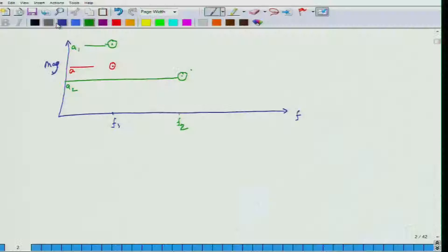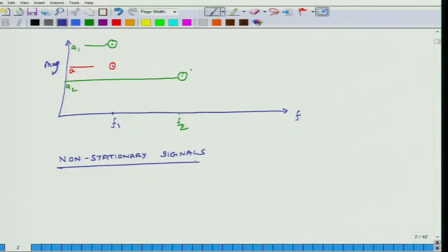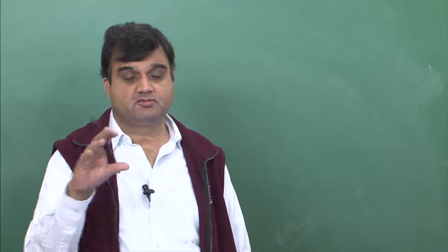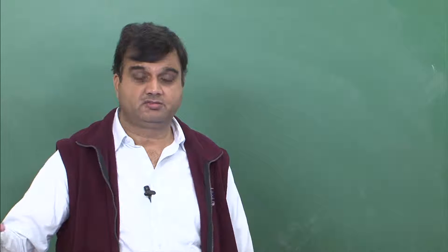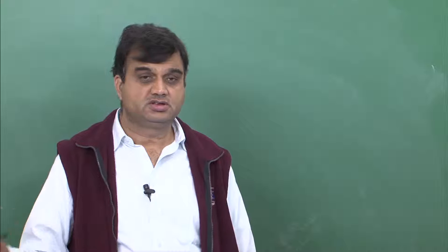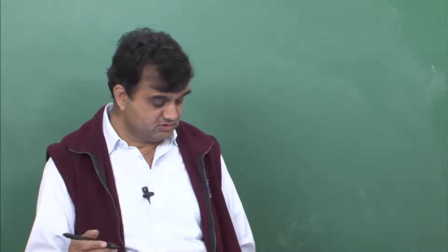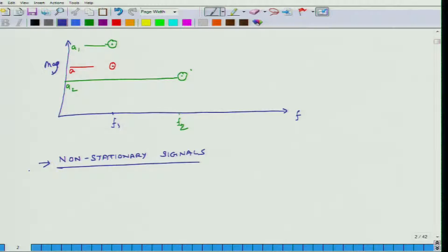But then there are non-stationary signals. If I take the Fourier transform of the signal over the first 5 seconds I will get one picture. Then maybe from 5 to 10 seconds I will get another picture. Then from 10 to 15 seconds I will get a third graph, and all these graphs need not be identical. If they are identical, it will be a stationary signal. So we are talking about non-stationary signals. Examples of non-stationary signals which we see in day-to-day life: